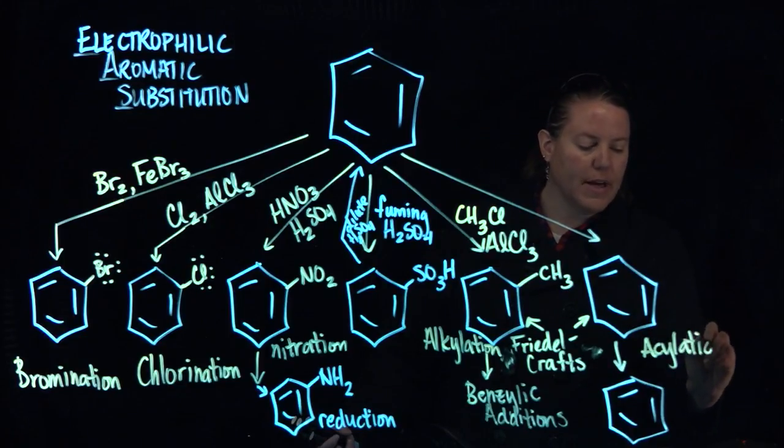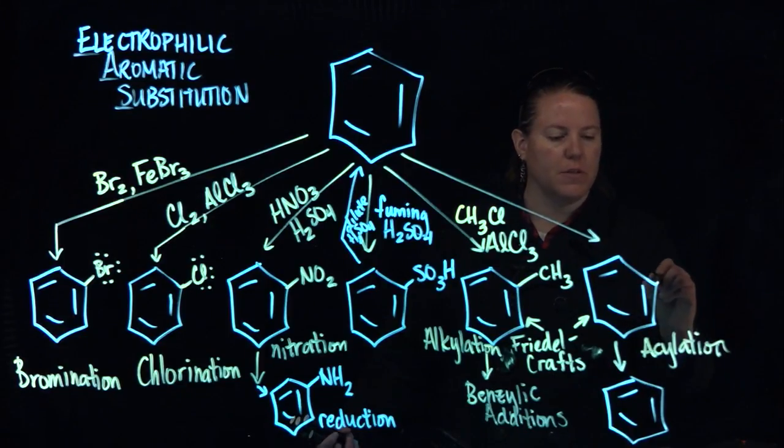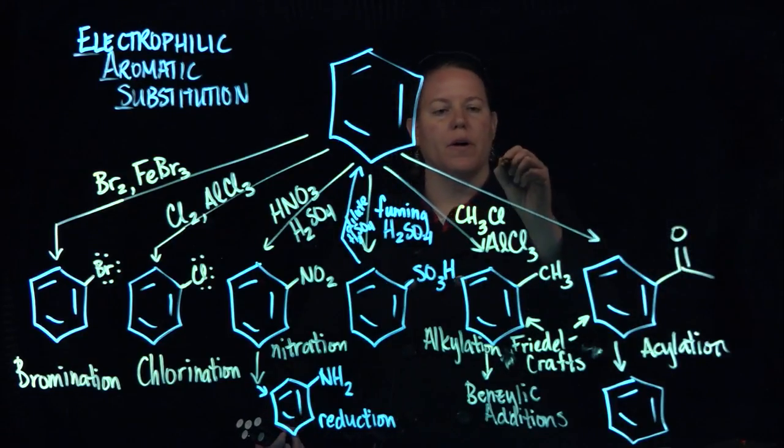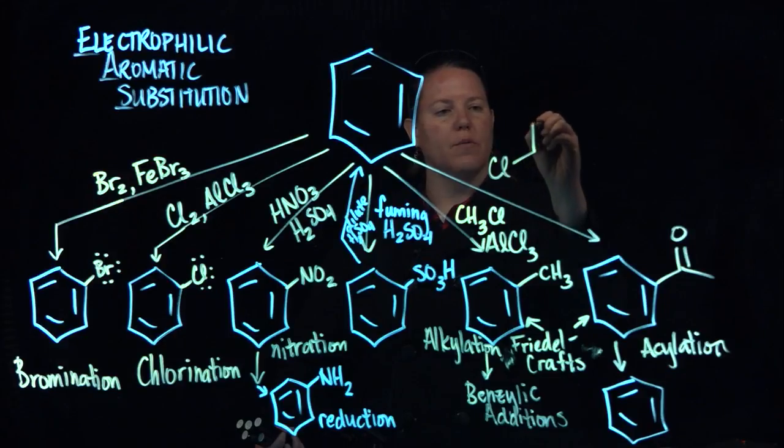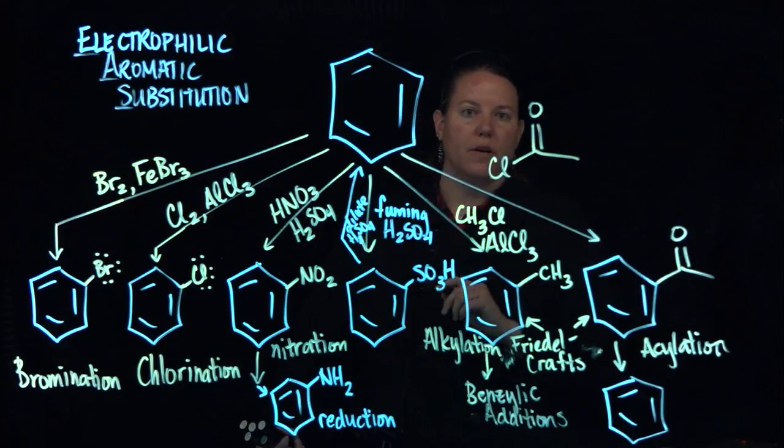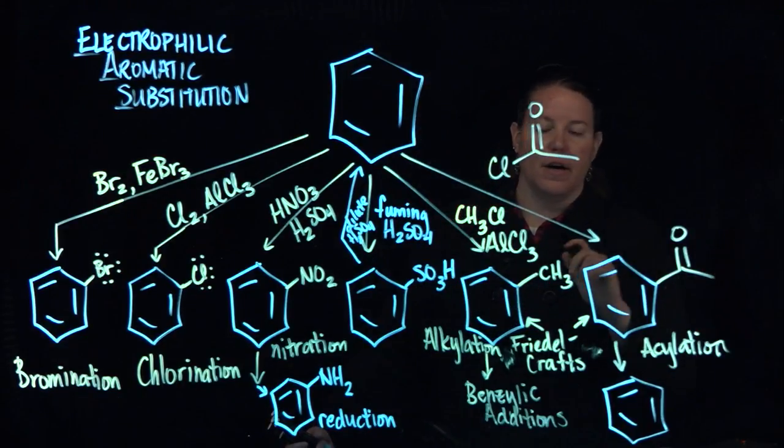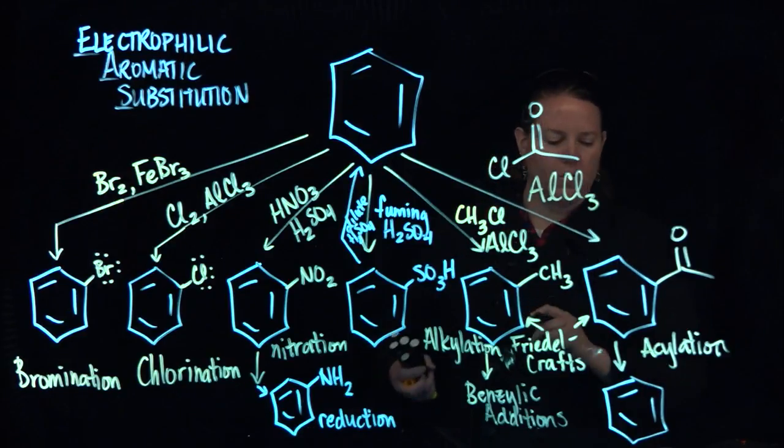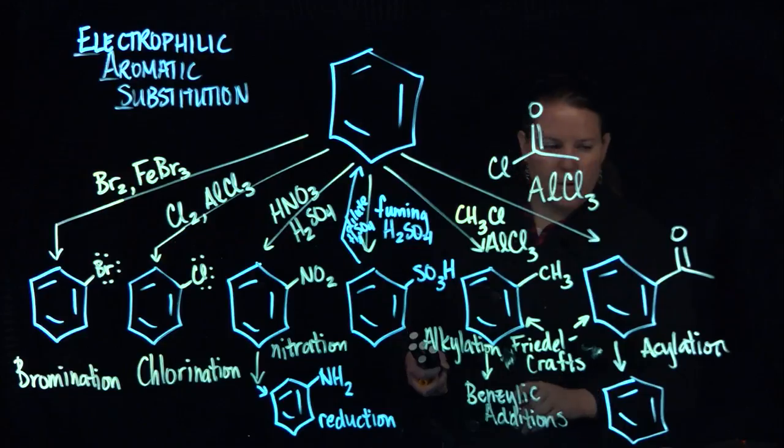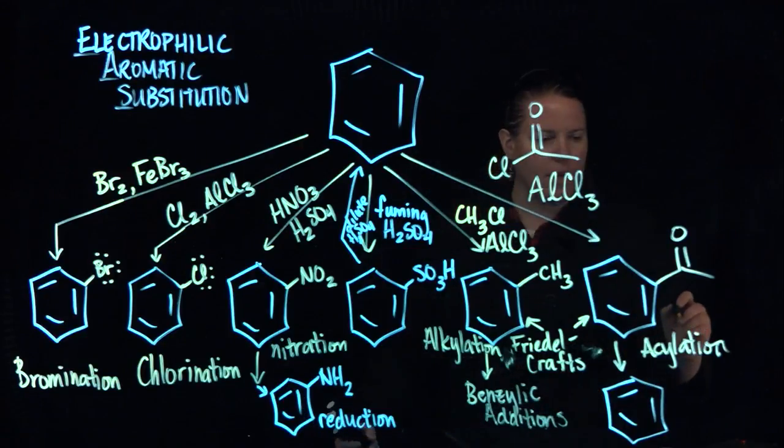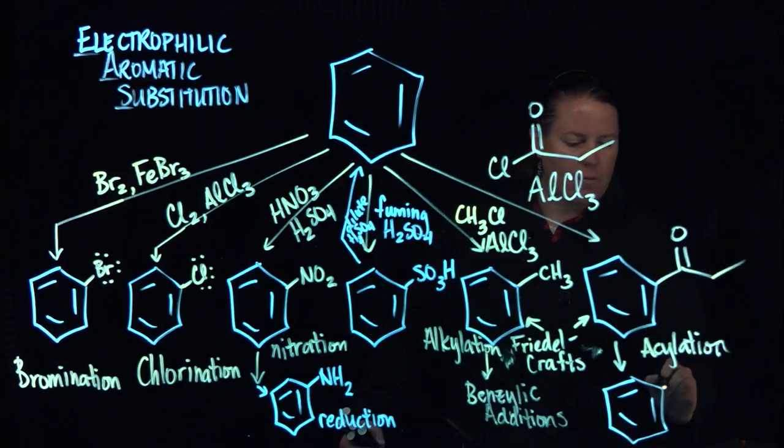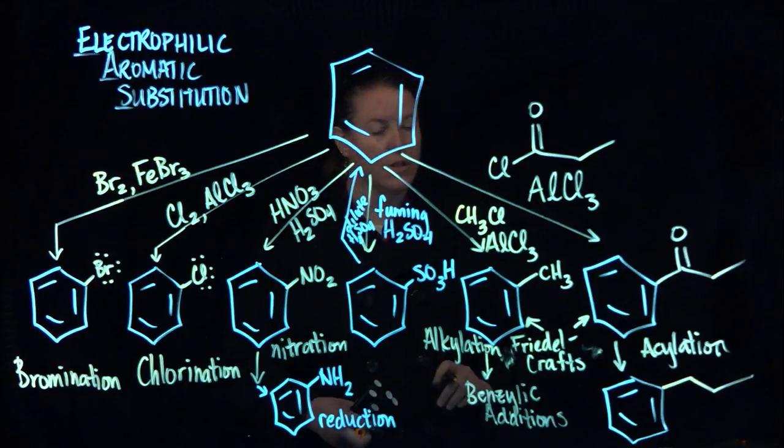And this is called an acylation, which you can guess why that's called an acylation. It's because it puts an acyl group on. So in that case, if I were putting that group on, I would need a Cl, and then I would need the carbonyl, and then the alkyl group on this side, and I still need aluminum chloride. In order to make something new with that, let's say I wanted to just bring it back to the alkyl group. I can do this.